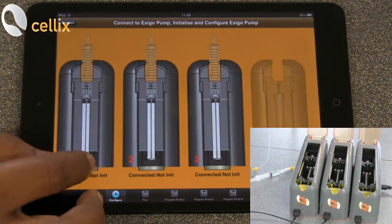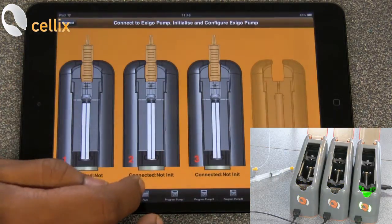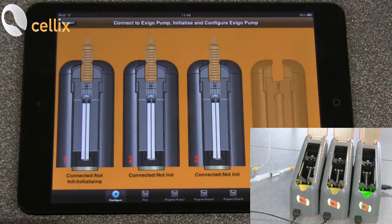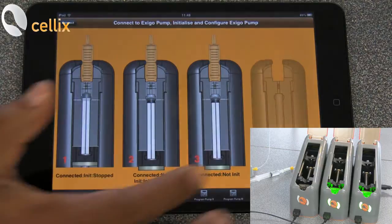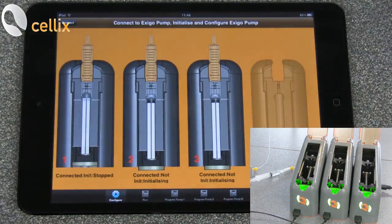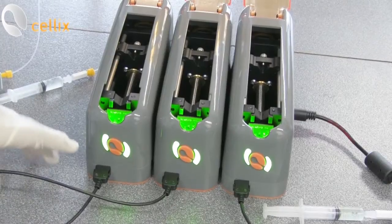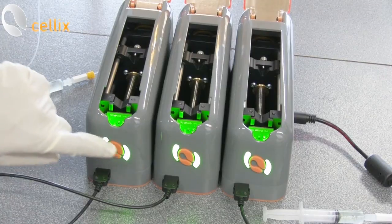Then you have to initialize three pumps. Double click the first one, initialize the second one. Once the pump is initialized, the light changes into green.